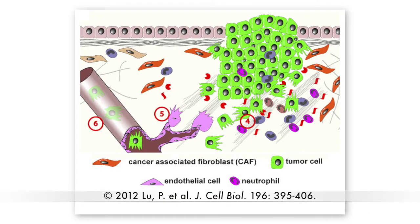In recent years, it's become clear that the behavior of cancer cells is regulated by other cell types within the tumor. Cancer-associated fibroblasts, or CAFs for instance, secrete chemokines that stimulate cancer cell proliferation and migration.